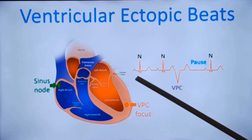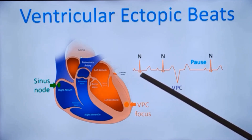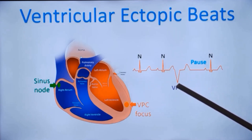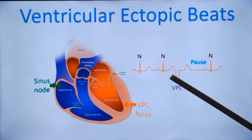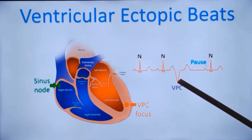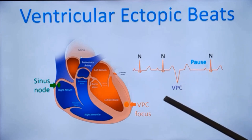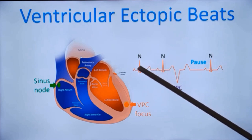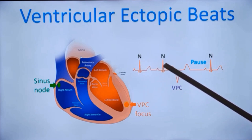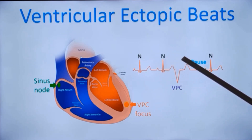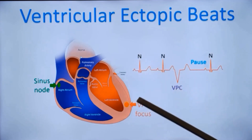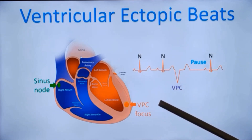If normal sequence is a P wave followed by QRS and T wave, a ventricular ectopic is a premature beat which occurs before the normal sinus beat, and it is usually followed by a pause. This pause following a ventricular ectopic beat is called a fully compensated pause. If you calculate the RR intervals, the interval including the pause will be exactly twice the regular RR interval — that is the meaning of fully compensated pause.